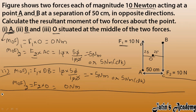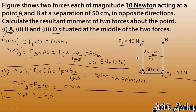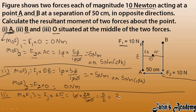For Part 3, O is fixed at the middle. Moment due to F1: F1 is 10 Newton, and the perpendicular distance from O to the line of action of F1 — call it OE — is 25 centimeters. So: 10 × (25/100) = 5/2 = 2.5 Newton meters.